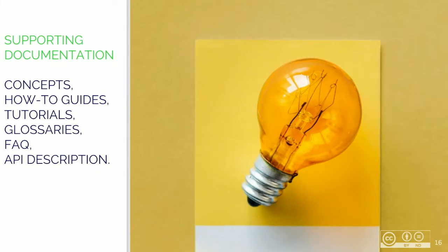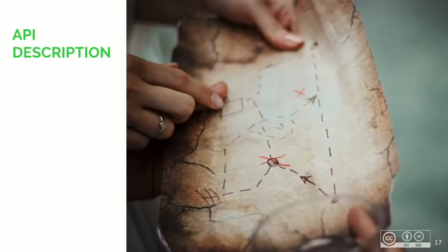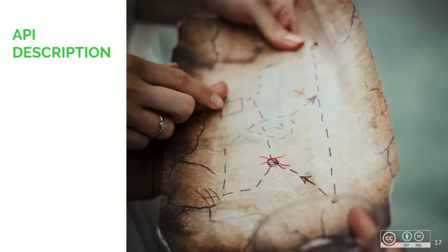Supporting documentation is a broader term that includes concepts, how-to guides, tutorials, glossaries, FAQ items, API description pages, and more, that help improve understanding of APIs. Most APIs rely only on reference docs, and we believe that's a mistake. That's why we started to recommend the use of a short introduction for every API when building developer portals for our customers, and that is what we call API description.